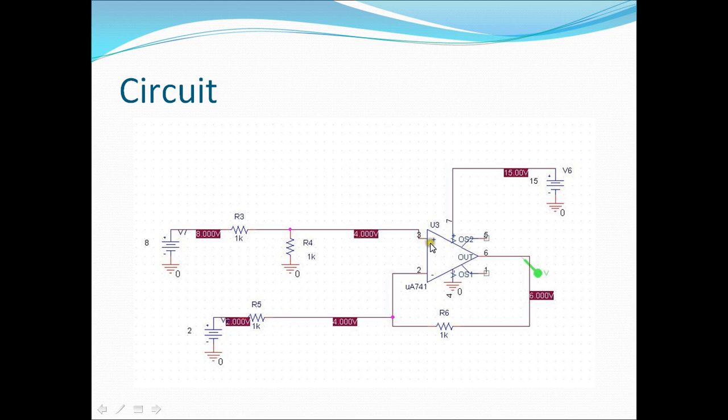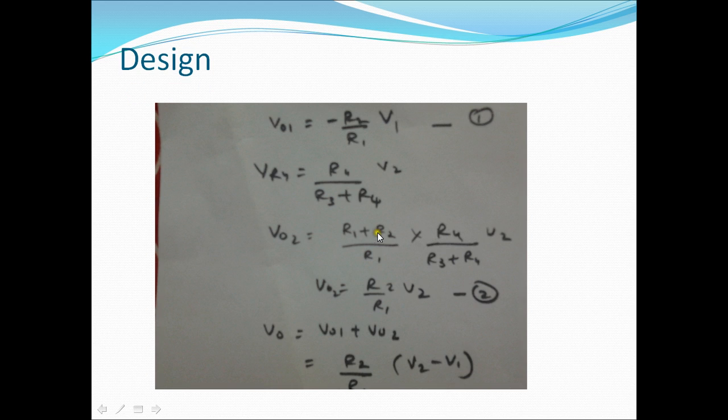So for non-inverting input the gain will be 1 plus R6 upon R5. Here you need to change, just 1 plus R2, instead of R2 you replace it by R6, R1 by R5.